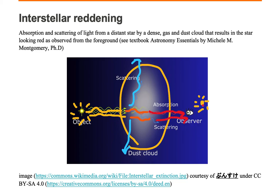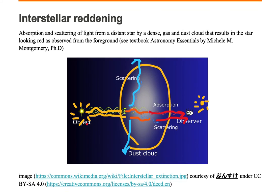So the observer sees the star as red because of the absorption and scattering by the gas and dust cloud, when in reality the star in the distance is a different color other than red most of the time. We call this interstellar reddening.